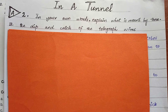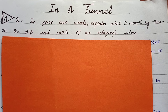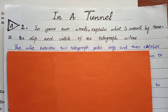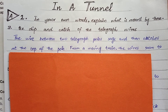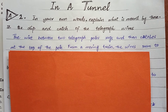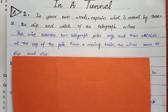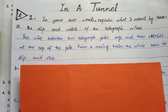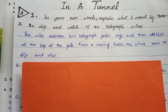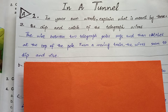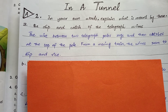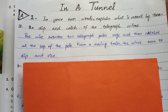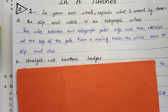The first phrase is 'the dip and catch of the telegraph wires.' The wire between two telegraph poles dips and then catches at the top of the pole. From a moving train, the wires seem to dip and rise. Telegraph poles کے درمیان کی wire جو signal کو catch کرنے کے لیے use ہوتی ہے، اگر ہم انہیں ایک چلتی ہوئی train سے دیکھیں تو یوں لگتا ہے جیسے وہ wires ڈوبتی اور اُبھرتی ہیں۔